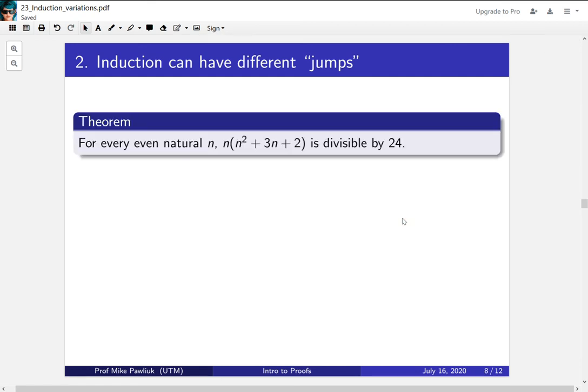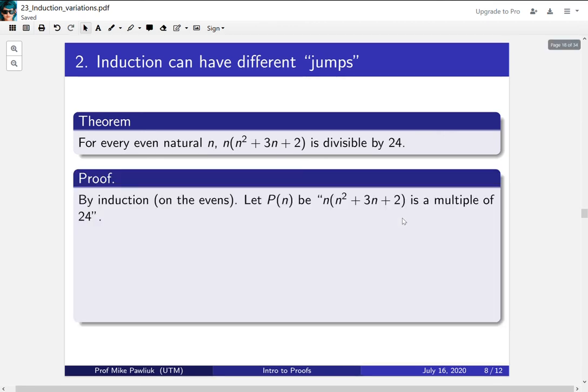Let's see an example of using proof by induction on the evens. This theorem says for every even natural number n, this polynomial n times (n squared plus 3n plus 2) is divisible by 24. It's a kind of strange statement, and it happens to be true. We're going to prove it by induction on the evens. So let p of n be the statement that this term is a multiple of 24.